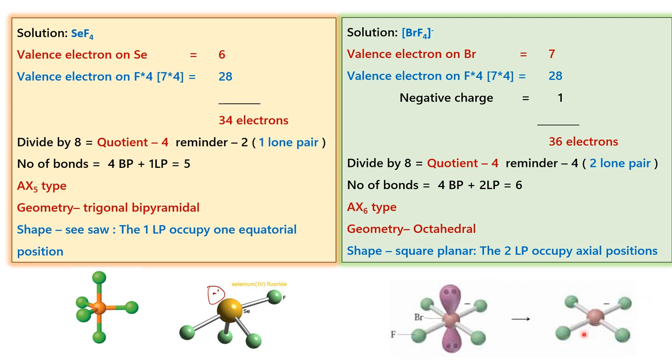The shape of this particular molecule is square planar and this is how we can very easily predict the geometry and shape of molecules using VSEPR theory. Hope you understood. Thank you. Like and subscribe to our videos for more such videos. Thank you.